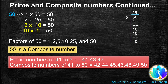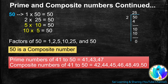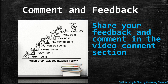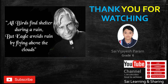Prime numbers from 41 to 50: 41, 43, and 47. Composite numbers from 41 to 50: 42, 44, 45, 46, 48, 49, and 50. I hope you understand the concept of prime and composite numbers. Thank you for watching. Please share your feedback and comment in the video comment section, and comment below which step you have reached today. That is it for today's video. Thanks for watching.